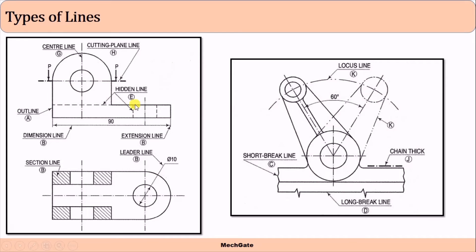This is the orthographic view of certain objects — two objects are shown. The outer boundary of the surface, or surface boundary of the objects, is drawn using the outline. Similarly, this circle is also visible in the front view, so it should be drawn using a visible line.